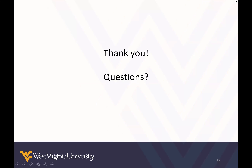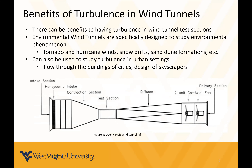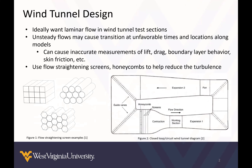Question from the audience: regarding the flow straightening screen examples — honeycomb, and the others shown — is the honeycomb the most widely used because it's the best, or just because it's easiest to make? Answer: Honeycombs are actually the most commonly used because they are the most efficient at straightening the flow. I don't know the exact efficiency values of all three, but honeycombs are typically used for their efficiency.